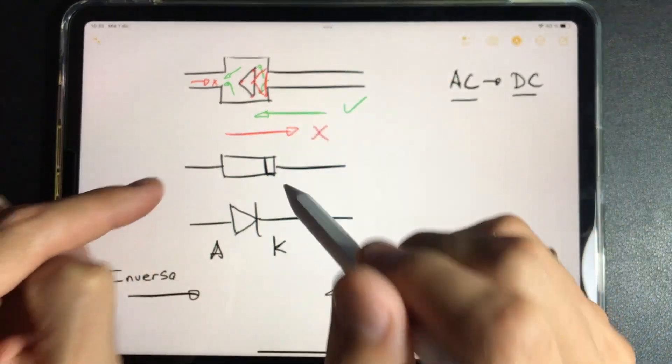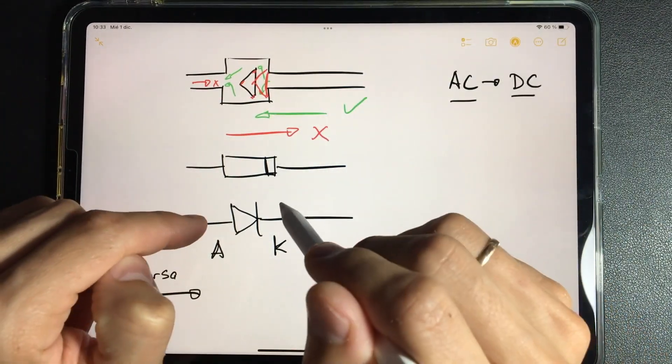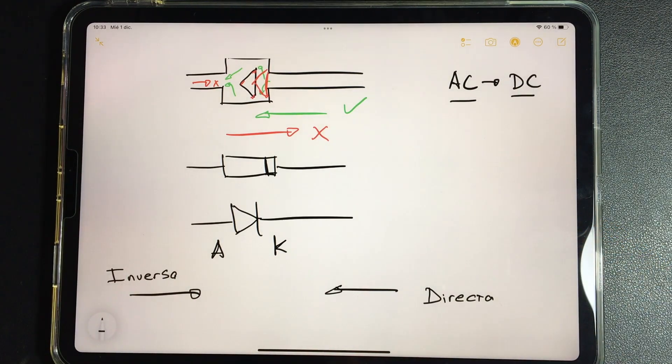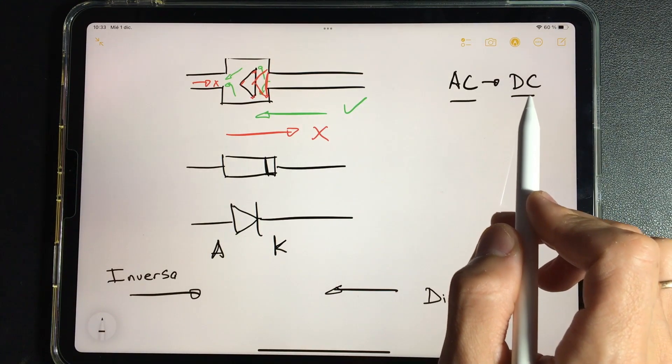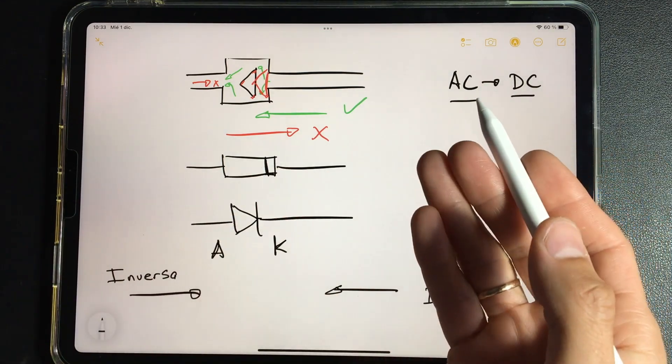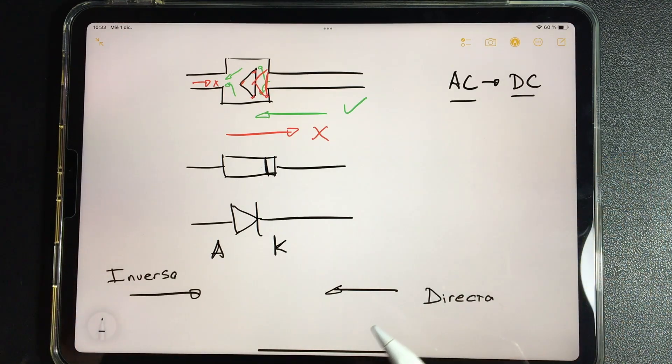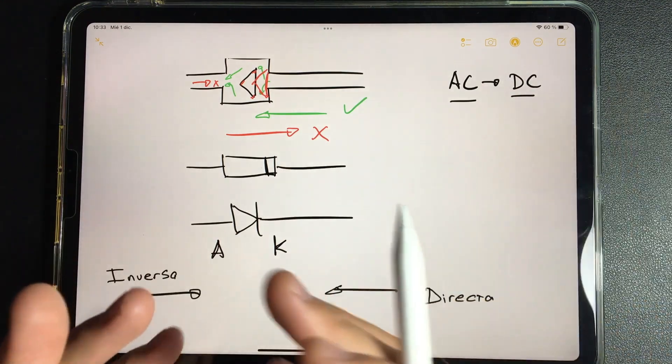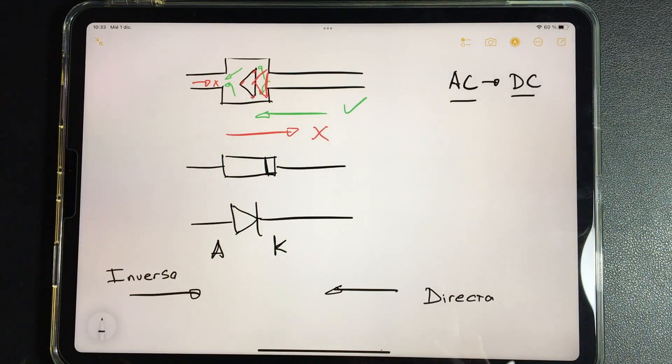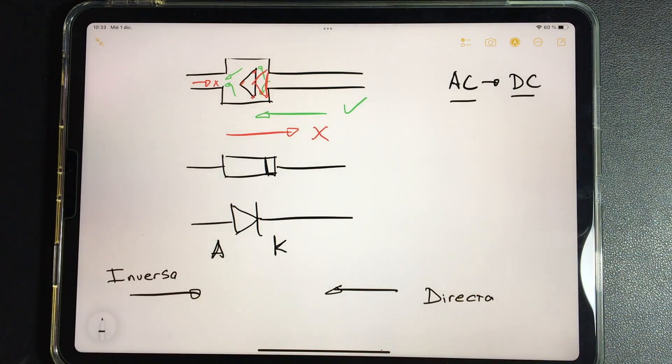This component, the diode, will help us convert alternating current into direct current. They will understand it in a very simple way, and they will find it on all plates. However, this rectification process is frequently damaged due to direct contact with alternating current, be it 110V, 220V, or 127V, which is constantly fluctuating, and power can be cut off and restored. Therefore, these components are often damaged quite a bit. Next, we will explain how this rectification occurs.